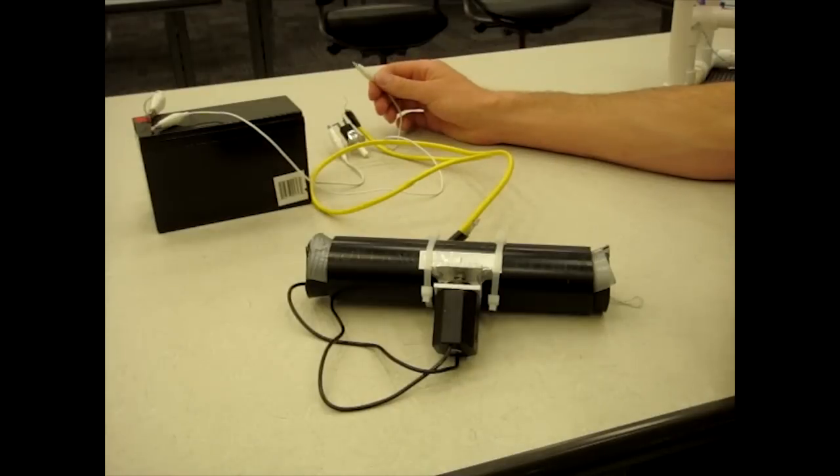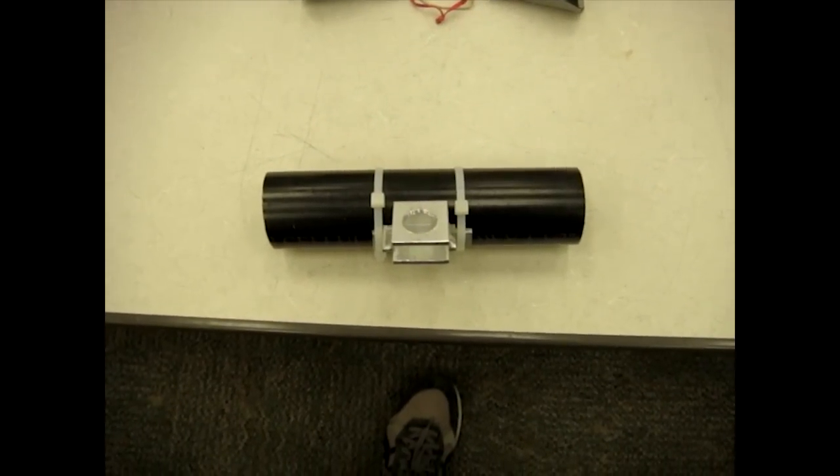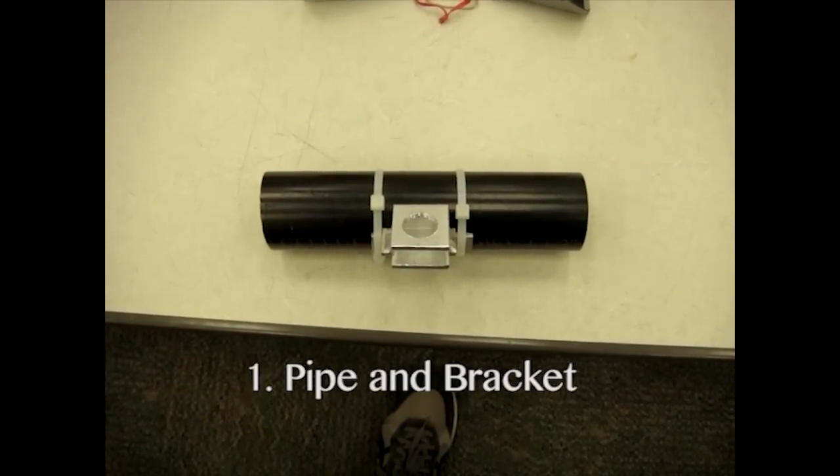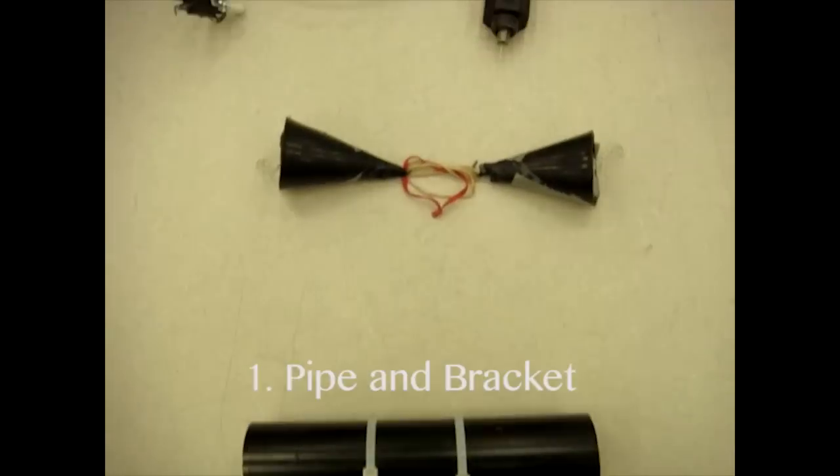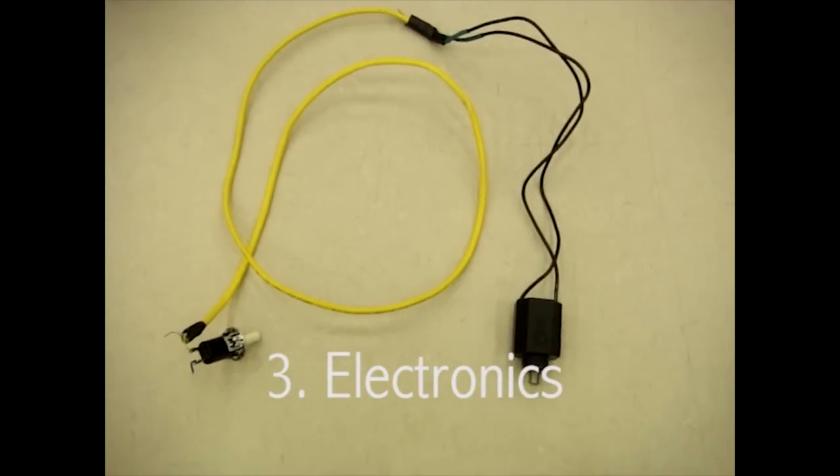So in this video, I'm going to show you how to make this very quickly. In this how-to video, we're going to break it into three sections. First, how to make the pipe and the mounting bracket. Second, how to make the end caps that seal it. And third, how to make the electronics.